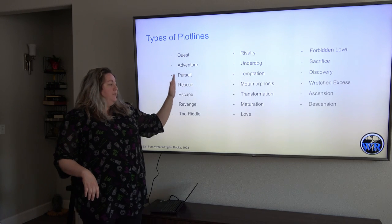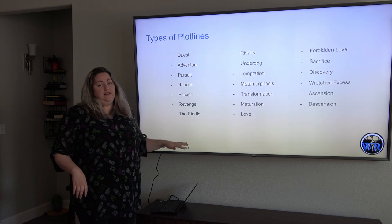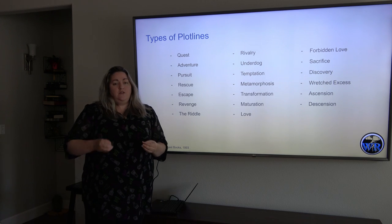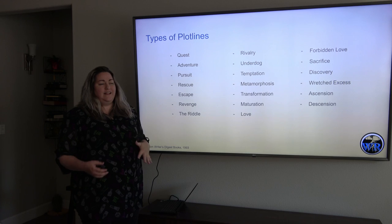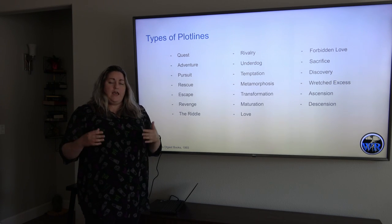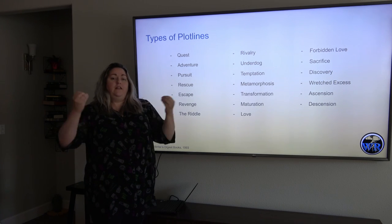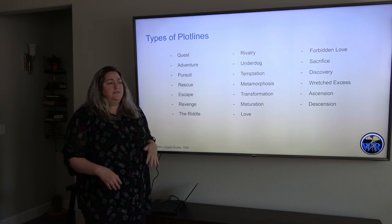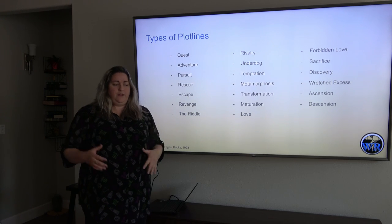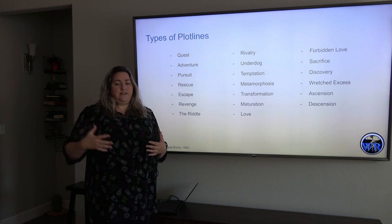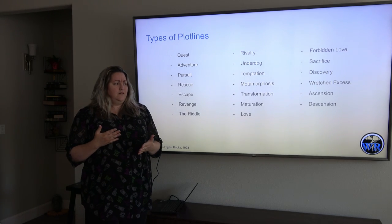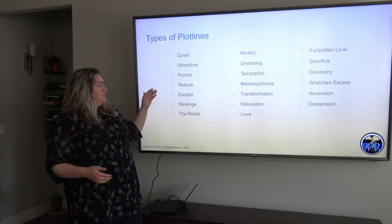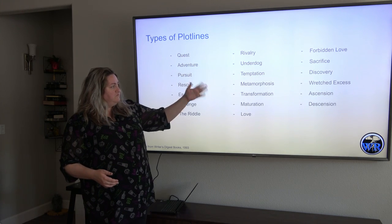These are various kinds of plot lines. This came from a list in the Writer's Digest books in 1993 — different kinds of plots that you can have within the conflict. So you have your quest plot, that's kind of your hero's journey story. They're going out and they have to fulfill a quest, a goal they're trying to reach. You have your adventure plot lines. Lord of the Rings is kind of an adventure because they're going out into the world. Pirate stories tend to be adventures.